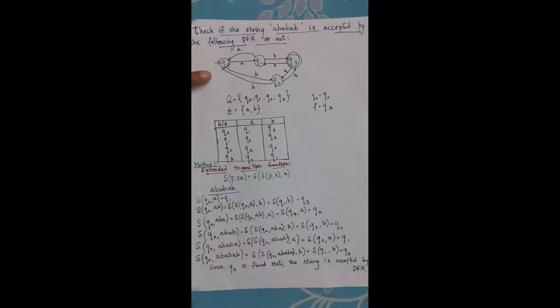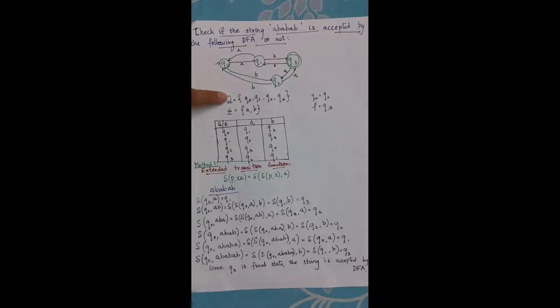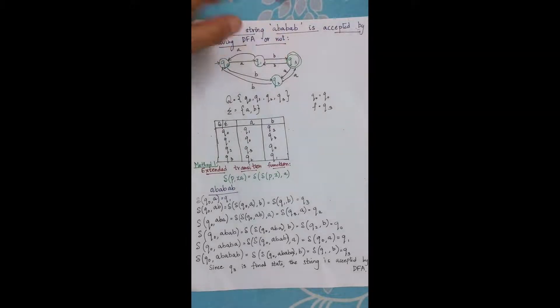Let us consider this particular DFA. This has four states, two input symbols a and b. The start state is q0 and the final state is q3. This is the transition table for the same.